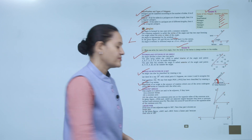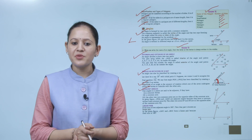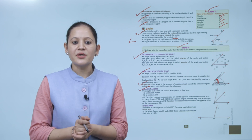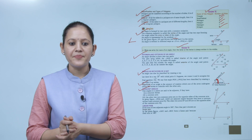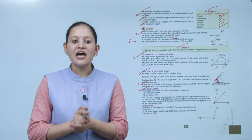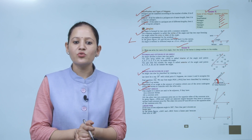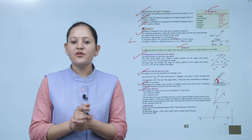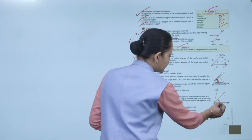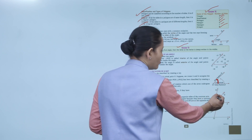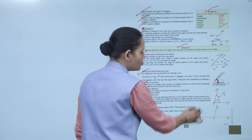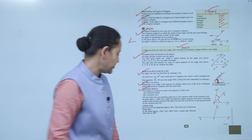Adjacent angles: two angles in a plane are said to be adjacent if they have a common vertex, a common arm, and the other two non-common arms on opposite sides of the common arm. In the figure, angles POQ and QOR are adjacent angles — they have common vertex O, common arm OQ, and arms OP and OR are on opposite sides.